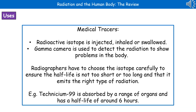One of the key uses of radiation in terms of the human body is in medical tracers. A radioactive isotope is injected, inhaled or swallowed, and then a gamma camera is used to detect the radiation passing out of the body in order to show the problems. The radiographer will choose the type of isotope used very carefully to make sure the half-life isn't too short so that it's vanished before they even get the gamma camera out, and not too long so that it's not emitting radiation over a much longer period. They've also got to make sure it's emitting the right type of radiation - it would be pointless giving someone a tracer that's going to emit only alpha radiation, because you're not going to pick that up on a camera outside the body.